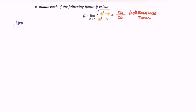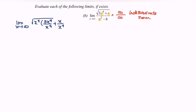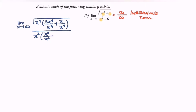We now have the limit as x approaches positive infinity of the square root of x to the power 4, times the bracket: 3x to the power 4 over x to the power 4, plus x over x to the power 4 — all over the factor x squared, giving x squared over x squared, plus negative 6 over x squared.